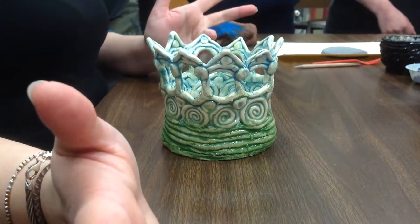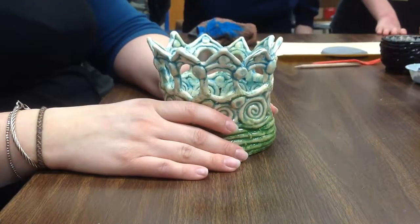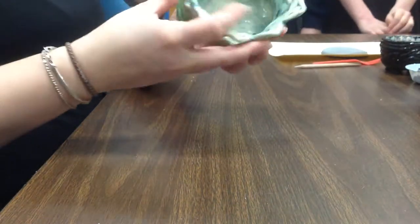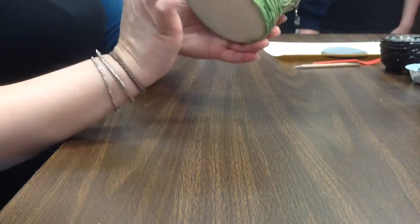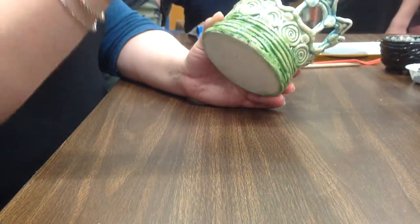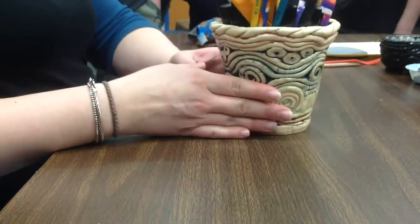Alright, so the coil pottery project that we're going to be doing - these are all examples I have around the room. This is a really elaborate one, but coil pottery starts with a base, and then we're going to roll cords or rope-like pieces of clay and stack them on top of each other to make different designs.